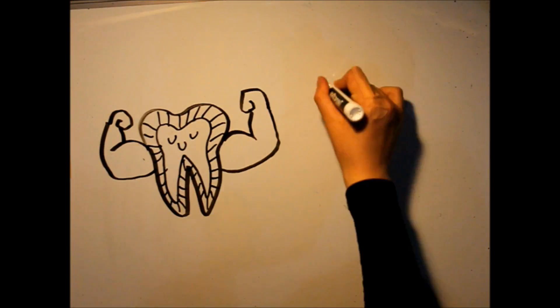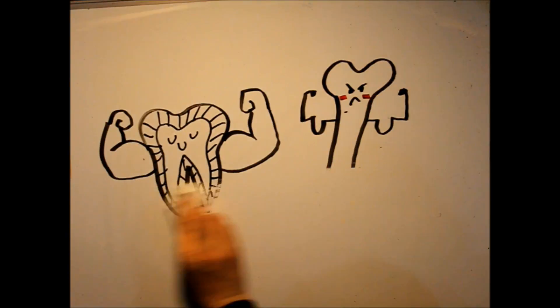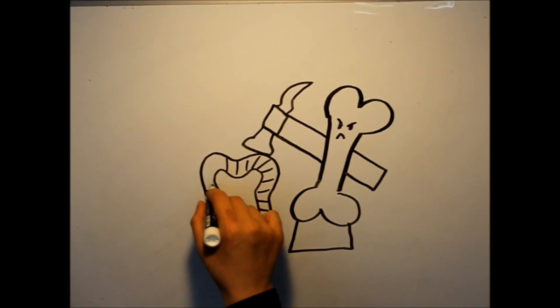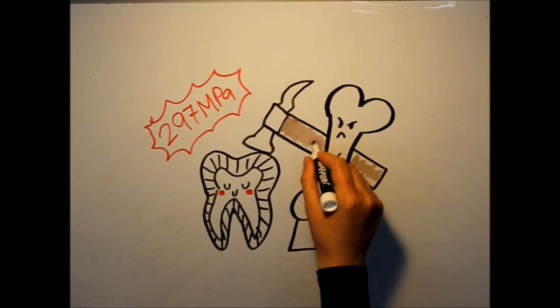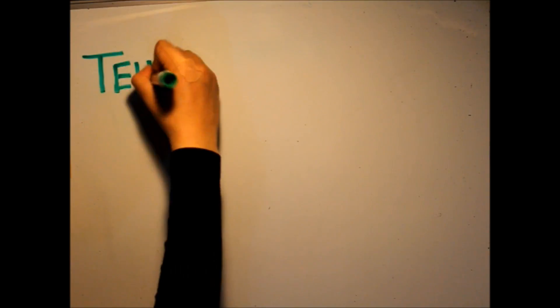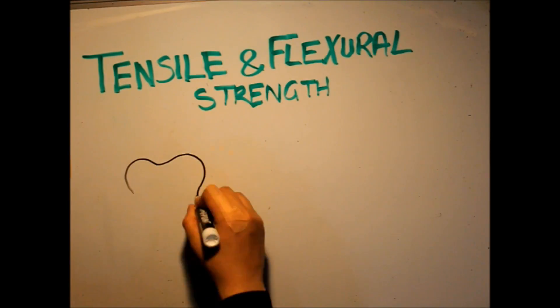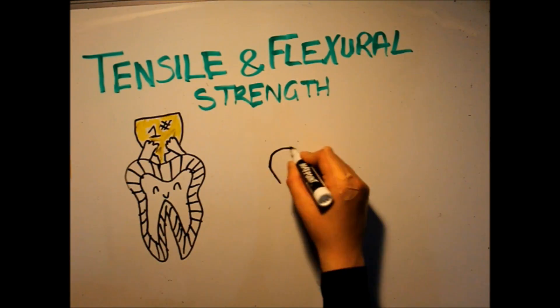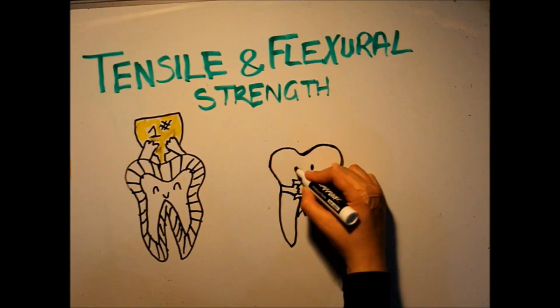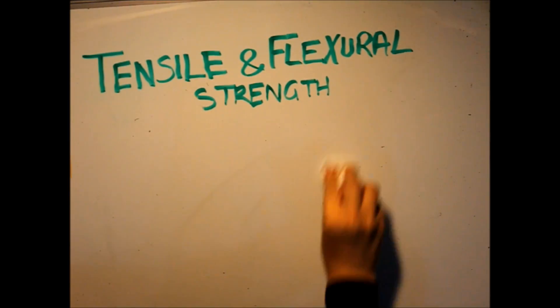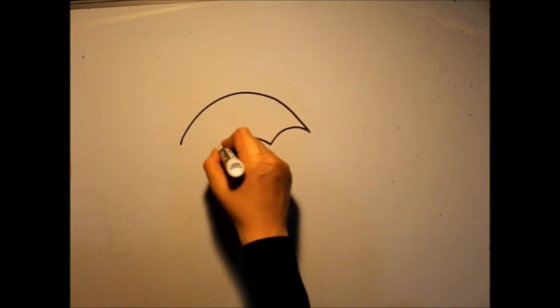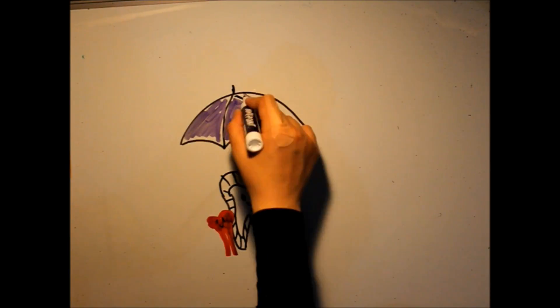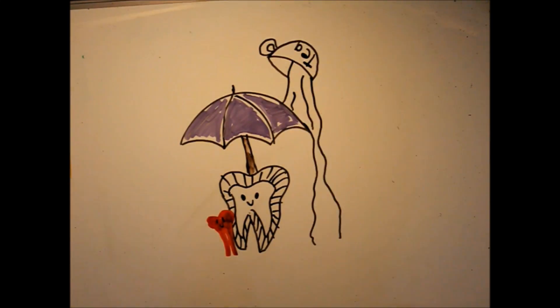This is not the only amazing quality dentin has. It is stronger than bone and has a high compressive strength of 297 MPa. It has both a higher tensile and fluctuant strength compared to the enamel, and it has low thermal conductivity and expansion.